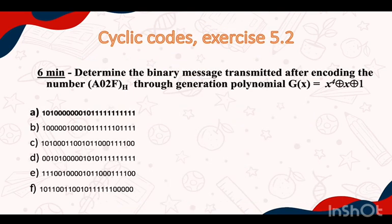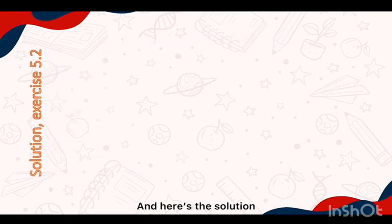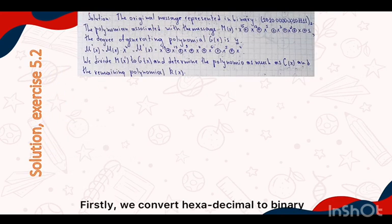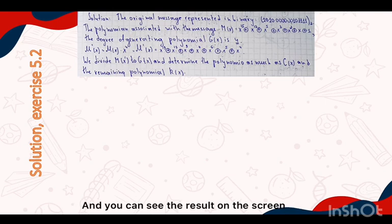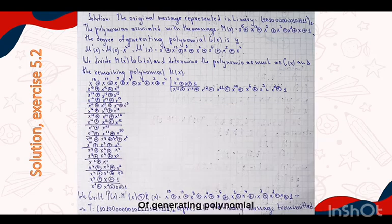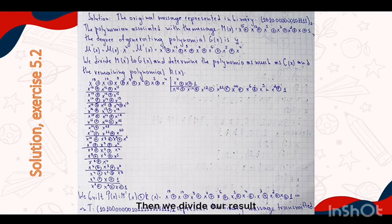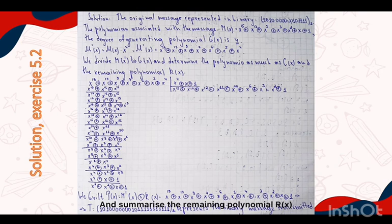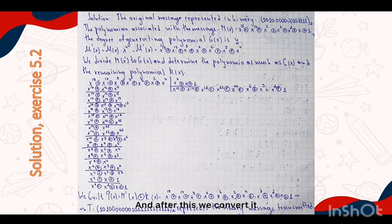The next task and here is the solution. Firstly we convert hexadecimal to binary, and you can see the result on the screen. Then we write the polynomial associated with the message and multiply it by the degree of the generating polynomial, which in our case equals 4. Then we divide our result by the generating polynomial and add the remaining polynomial r(x) to m'(x) to find the received message. After this we convert it to binary and write the answer.